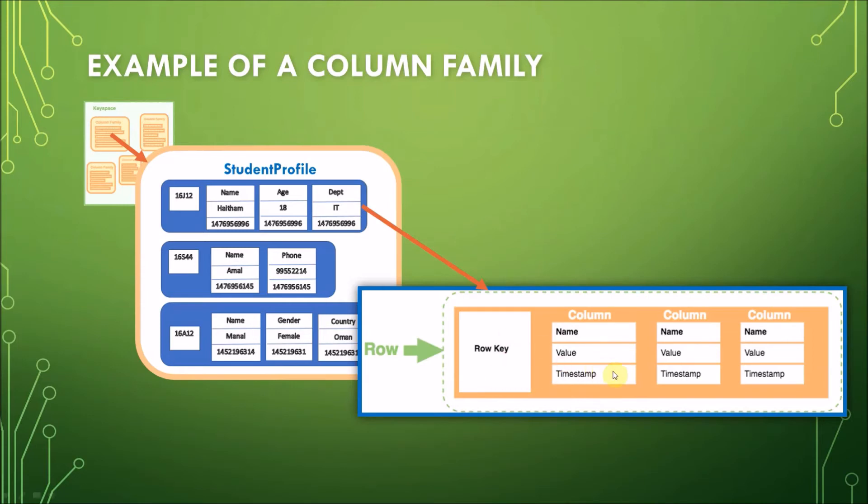Each column contains a name-value pair. As you can see in here, we have a name and a value. So there is a name-value pair along with a timestamp. Note that this timestamp in this example here uses Unix epoch time for the timestamp. Again, each column contains a name, a value, and a timestamp.